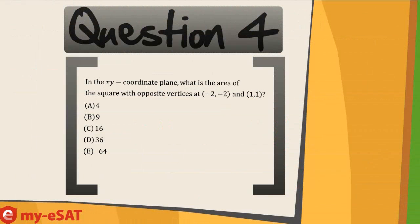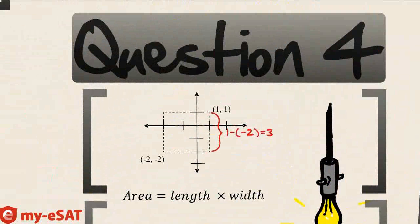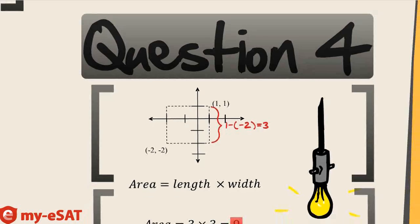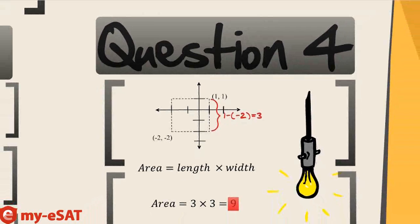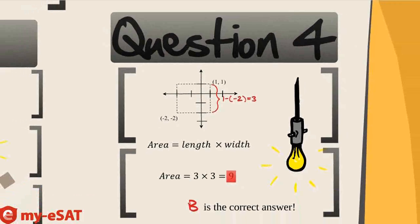Last but not least, question 4. In the x, y coordinate plane, what is the area of the square with opposite vertices at negative 2, negative 2, and 1, 1? Let's quickly sketch this so we have an idea of what we're working with. Area of a square is length times width. To find the width, let's subtract the x coordinates: 1 minus negative 2 gives us positive 3. Since it's a square, the length is also 3. Using the area formula, 3 times 3 equals 9 — making answer choice B correct.